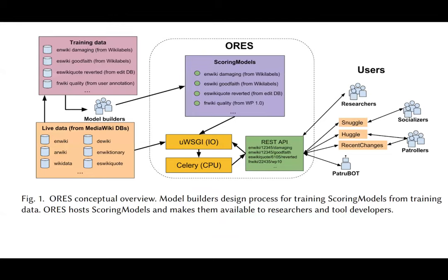The technical components of ORS consist of a model building framework that is designed to extract features from Wikipedia and train predictive models. The system also provides a service for hosting models for high performance real-time access. We designed the service to provide a familiar interface for Wikipedia's community of tool developers by matching the interaction patterns of the MediaWiki API, the primary source of data and actions that tool developers worked with before the introduction of ORS.